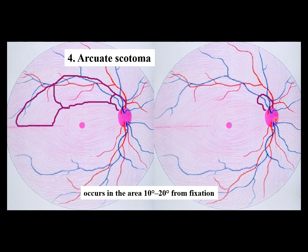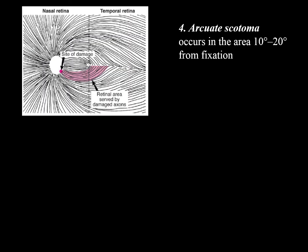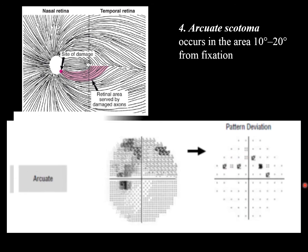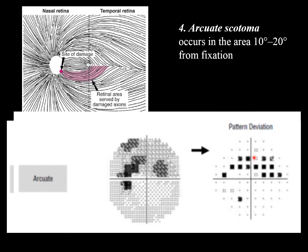Arcuate scotoma is a defect between 10 to 20 degrees that extends from the optic disc in an arc shape, ending and respecting the horizontal line. It can start as a Seidel scotoma, or progress to an incomplete arcuate or complete arcuate. It is essentially an extension of the blind spot, and here you can see changes in this area encroaching on the paracentral region.